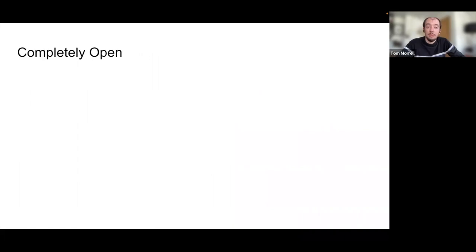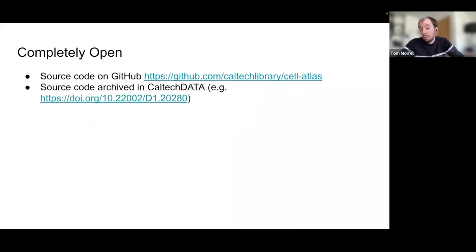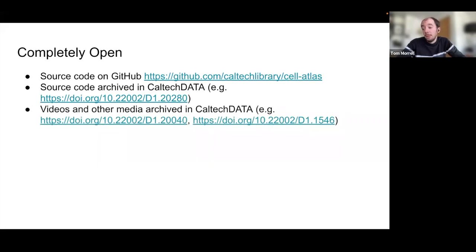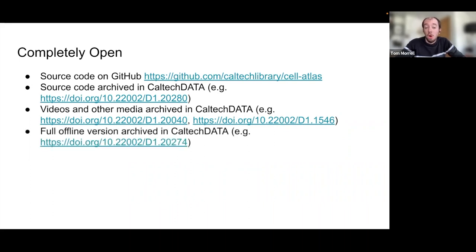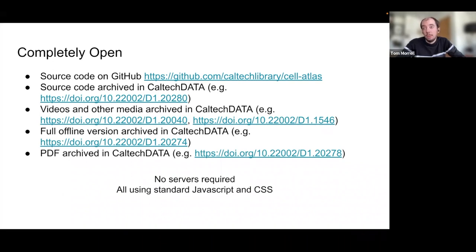The exciting thing about this project is it is completely open. All of the source code is available on GitHub if you want to see exactly how we script this processing, and all the source code is also archived on CaltechDATA so you can cite the specific code that we used. The videos and other media like images and 3D structures are also archived in CaltechDATA, and the full offline version is also in CaltechDATA as well as the PDF. The cool thing is there are no servers required — all the interactivity is accomplished using standard JavaScript and CSS, and we hope this means the book will be much more sustainable into the future. This is available today at cellstructureatlas.org.